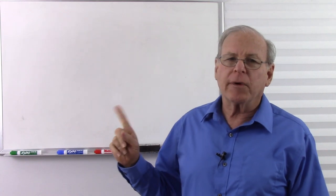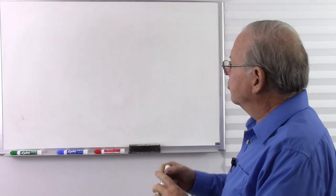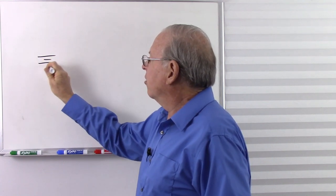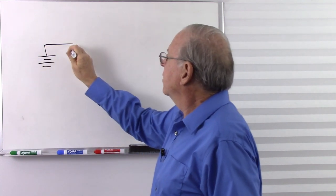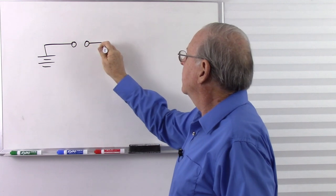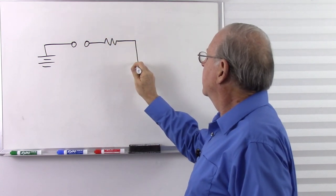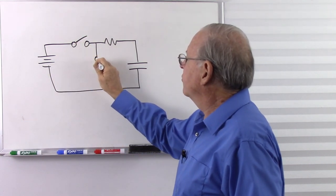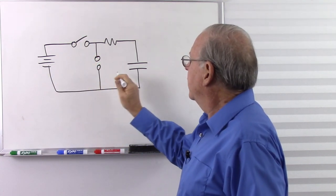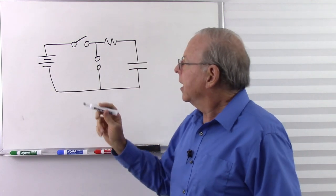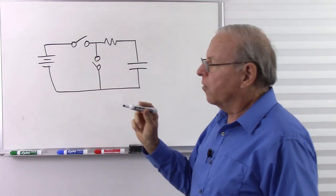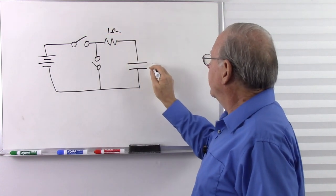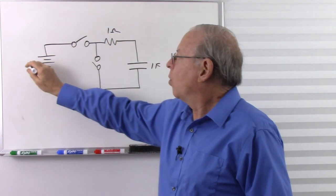Let's go ahead and get started by reviewing what we already know about how capacitors charge and discharge. Let's take a look at our charge and discharge test circuit. We have a capacitor, a couple of switches, a battery and a resistor. For our test circuit, we made this 1 ohm, 1 farad, 1 volt.